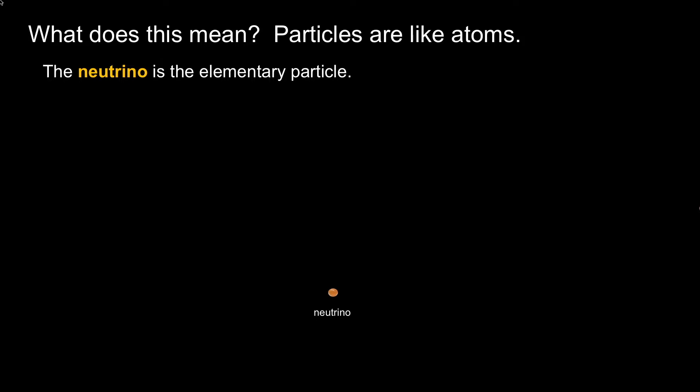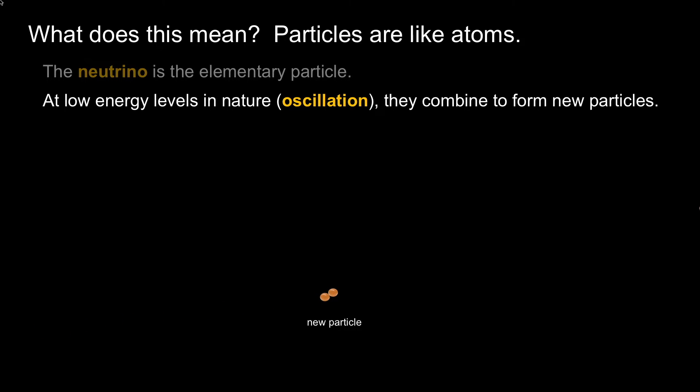What does this mean? Why is a neutrino at particle count one? It'd be similar to hydrogen. Imagine that the neutrino is the elementary particle, and at low levels in nature, oscillation occurs. This is how a neutrino could form the muon neutrino or tau neutrino. As solar neutrinos arrive at earth, they have enough energy to merge, combine, and create new particles.